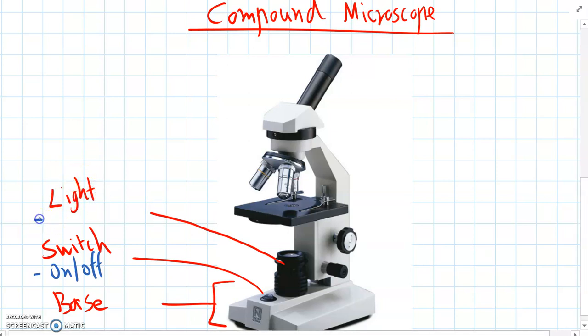And the light sends light upwards through the sample, and then through all the lenses and into our eye. And that's how we can actually see the image.